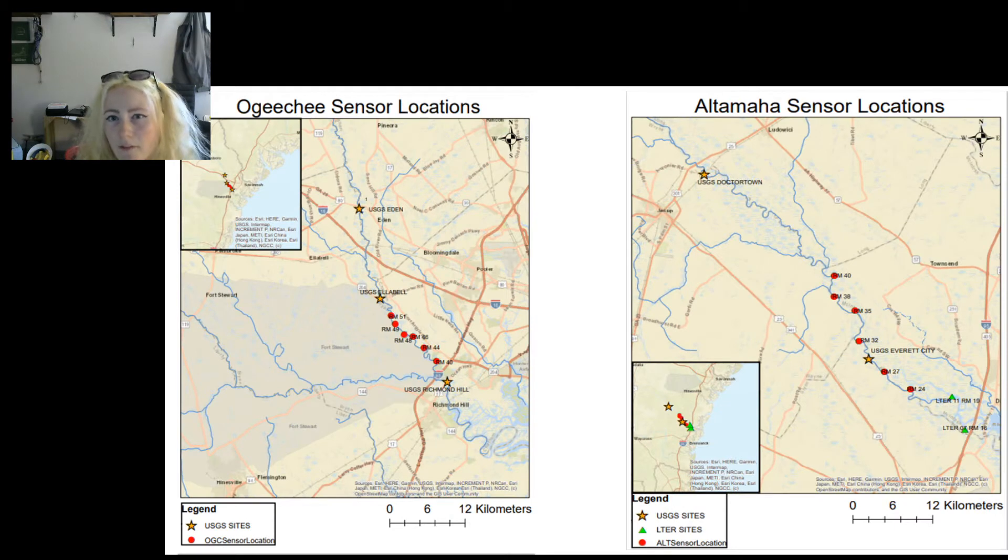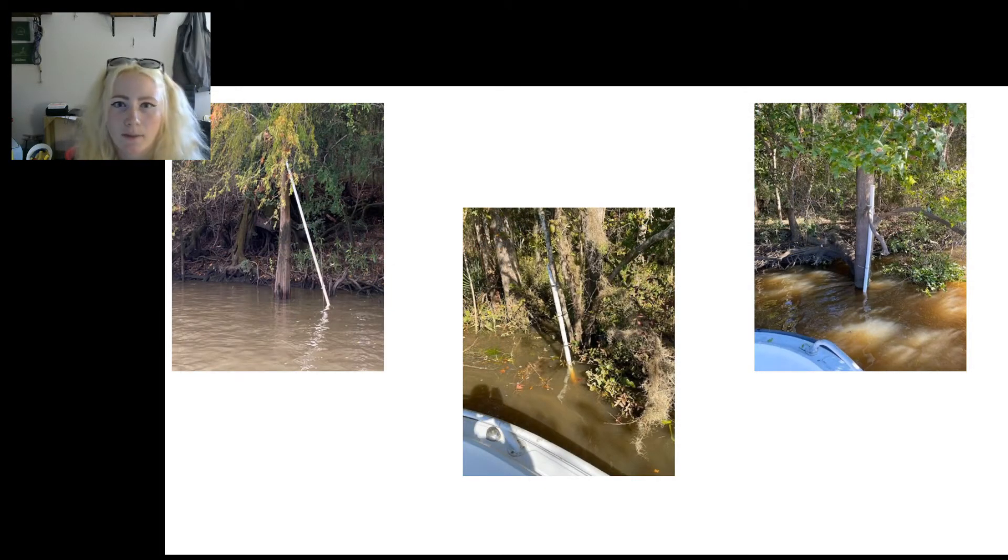Six pressure sensors have also been installed on the Ogeechee starting from River Mile 40 and expanding to River Mile 51. Six sensors have been placed in the Altamaha from the range of River Mile 24 to River Mile 40. LTER sites are also downriver on the Altamaha and provide salinity and water depth using deployed pressure sensors. Here are some examples of sensors deployed on the rivers.